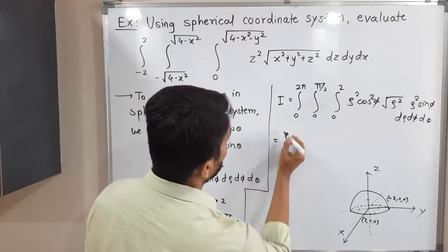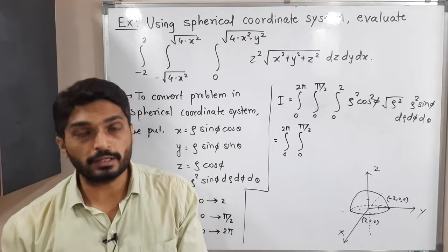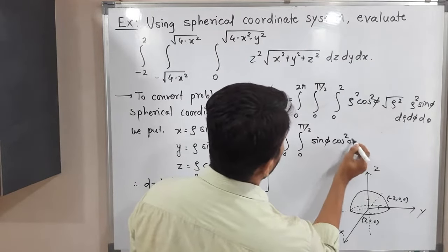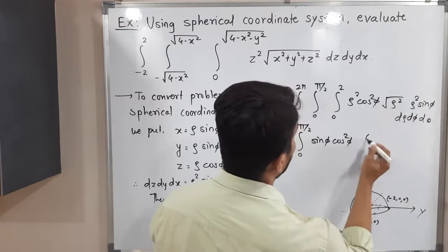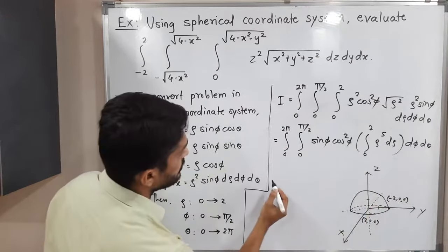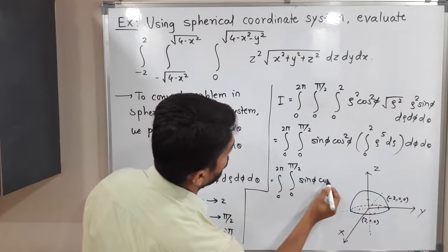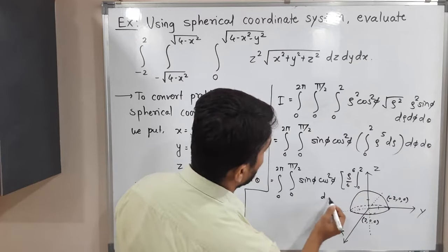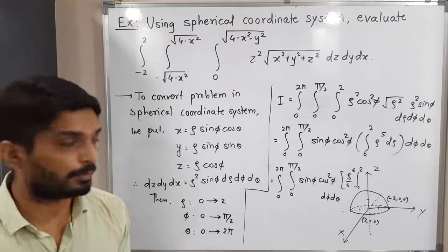Let us simplify. For the inner integration, ρ is the variable and sin φ and cos² φ are constants, so they come outside. The square root and ρ² cancel appropriately, giving a total power of ρ⁵. So we integrate ρ⁵ from zero to two, which gives ρ⁶/6 evaluated from zero to two. Two raised to six is 64, so we get 64/6. This is a constant that we take outside, giving 64/6 times the double integral of sin φ cos² φ dφ dθ, with φ from zero to π/2 and θ from zero to 2π.